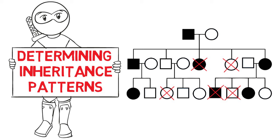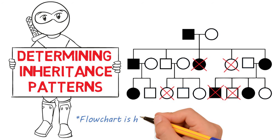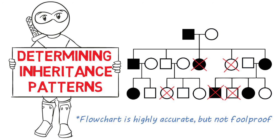Alright, we're going to create a flowchart to solve pedigrees, so you'll simply take any given pedigree through a series of questions until you determine the inheritance pattern. I want to add a note here: this flowchart has a high degree of accuracy, but it is not foolproof. The random nature of genetics makes it impossible to be 100% certain. So let's get started.